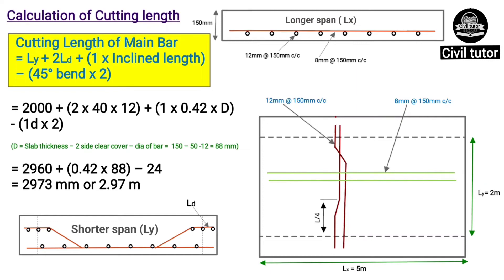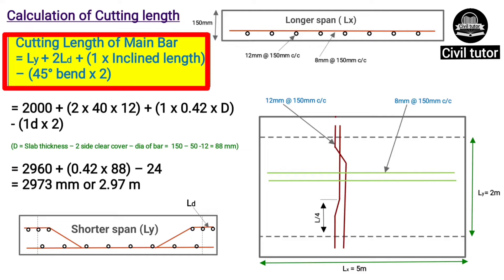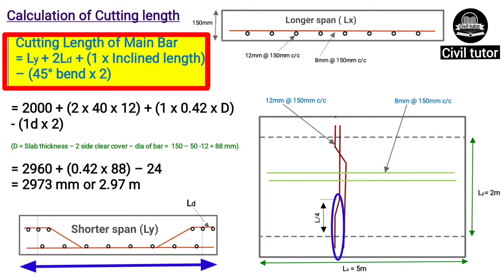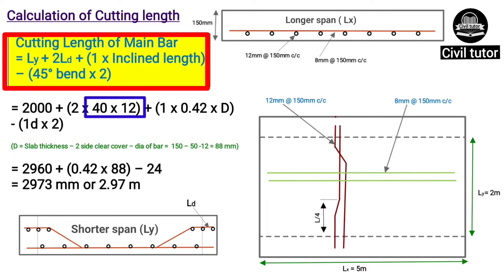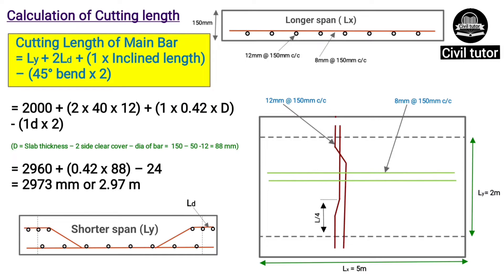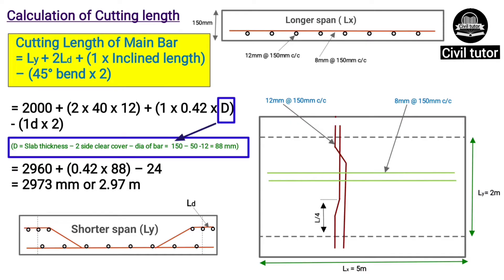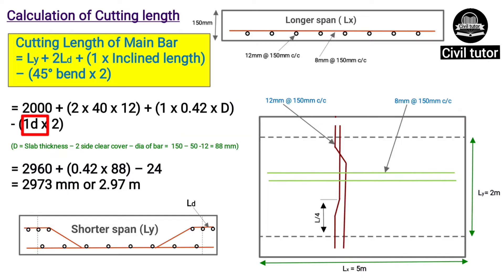Now we need to calculate the cutting length of both main bars and distribution bars. The cutting length of main bar = span Ly + development length on each end (2 × Ld) + 1 times inclined length, since the main bars are bent up at alternate ends. Ly is 2000mm; development length is 40 × 12. Inclined length = 0.42D − 2 times 45-degree bend, where capital D = slab thickness − 2 × clear cover − bar dia = 150 − 50 − 12 = 88mm. The 45-degree bend equals 1D. On substituting these values, the cutting length of the main bar = 2973mm or 2.97m.